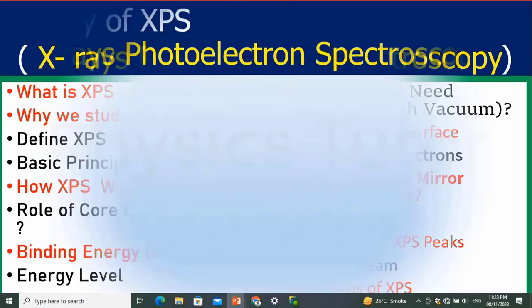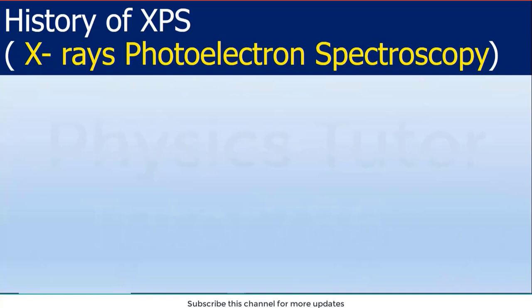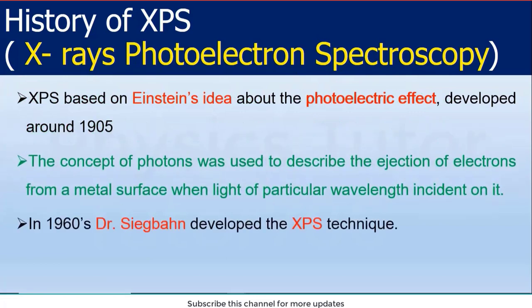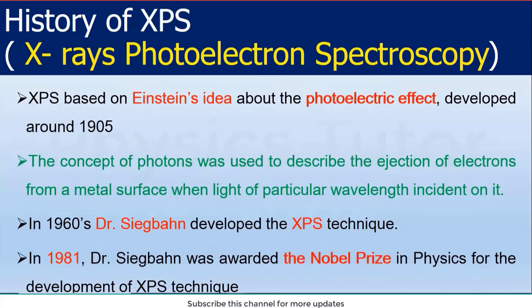Photoelectron spectroscopy. If we go back into the history of XPS — X-ray photoelectron spectroscopy — we see that Einstein gave his idea of the photoelectric effect, in which a photon of a particular wavelength incident on a surface ejects an electron. This idea was used by Siegbahn in 1960. He developed a characterization technique named XPS and was awarded the Nobel Prize in Physics for this in 1981.